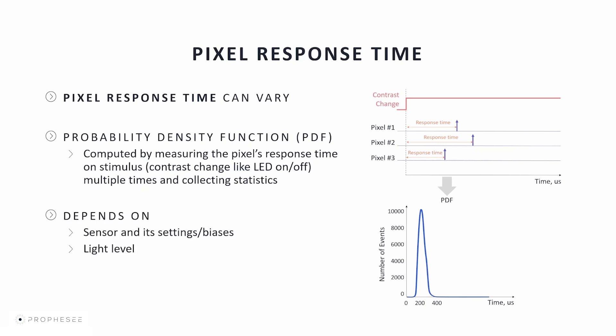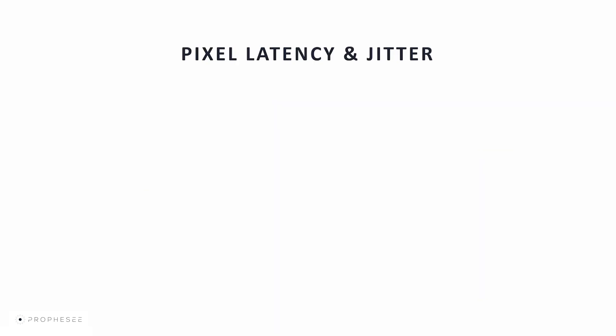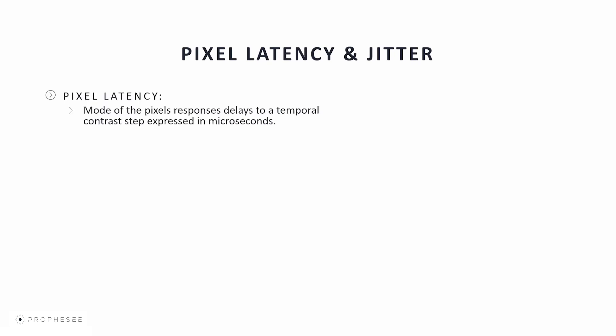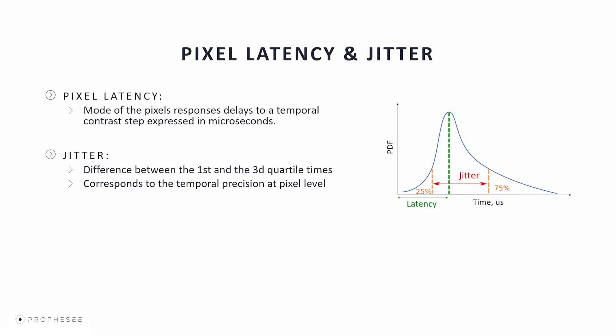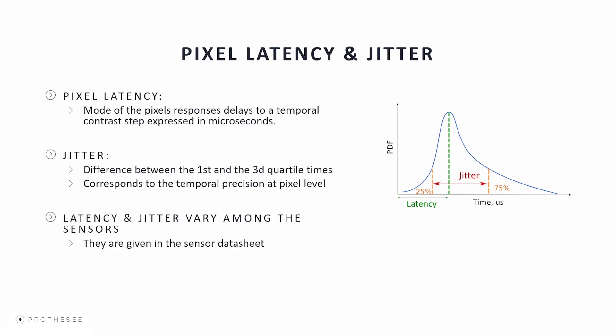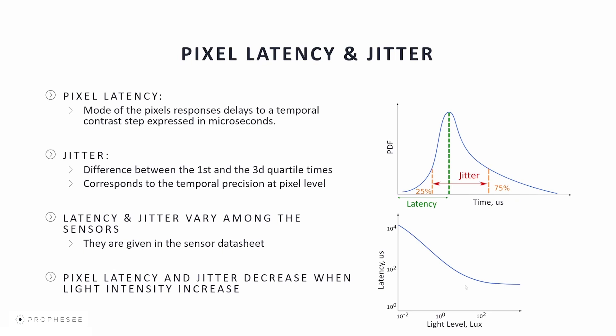Pixel latency is computed as the mode of the pixel's response time delays to the temporal contrast step, expressed in microseconds. It shows the delay between the change in the scene and its detection by the pixel — a smaller pixel latency is better. Pixel jitter is computed as the difference between the first and third quartile of response time, and corresponds to temporal precision at a pixel level. Pixel latency and jitter vary among sensor generations and are given in the sensor datasheet. Both decrease when light intensity increases and can be improved by tuning sensor biases like bias FO.